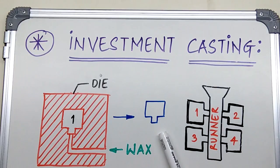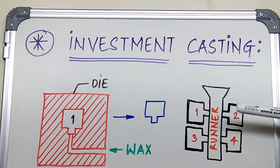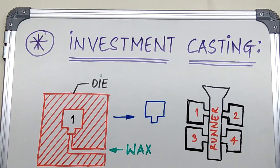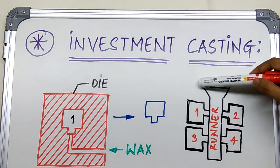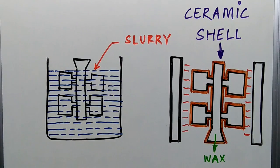So many such wax patterns are made with the help of this die and these patterns are then mounted on the runner assembly. This is a runner assembly and these are the patterns which are mounted on it. And this is the pouring cup through which we will be pouring our molten metal.